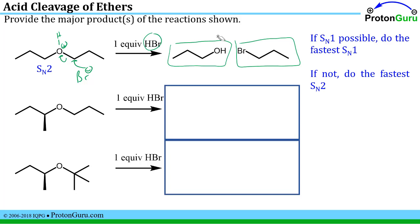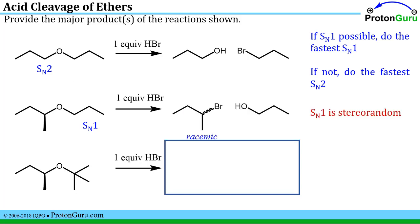Let's take a look at the second example. In this case we have a secondary site that could be attacked once we activate the oxygen and we have a primary site. SN1 is possible on a secondary site. We're going to do an SN1 reaction in this case and it's this side that's going to be broken off as the carbocation and attacked by the bromide nucleophile. So we add the bromine to this site where the carbocation would initially form, and I've written down here that it's racemic because the SN1 reaction is stereorandom.